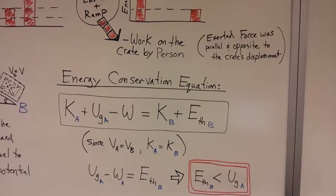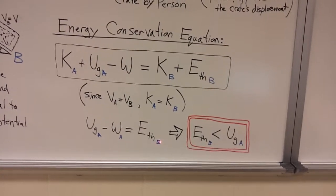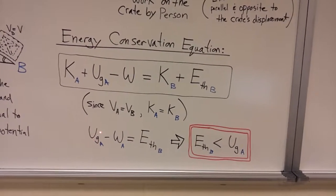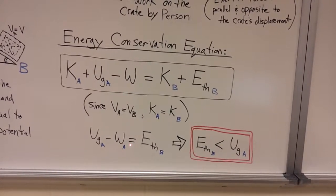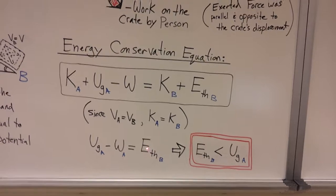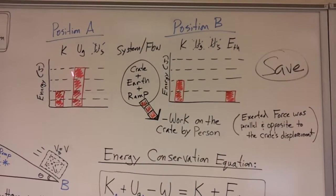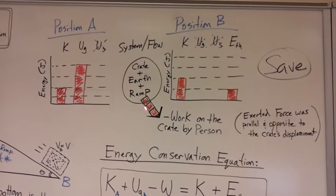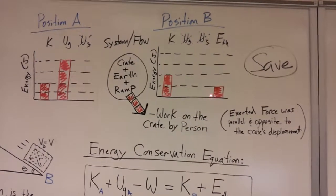We subtract the kinetic energy from each side, and we get a simplified version of our energy conservation equation, which says that the gravitational energy we started with minus the work that was done, the energy transferred out, is equal to the thermal energy we have left. If we look back at our energy bar chart, we can see that the gravitational energy we started with, four bars, minus the three bars of work done, is equal to the thermal energy left in the end.